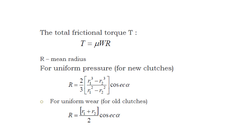The total frictional torque T is equal to μWR. It means T equals μ multiplied by W multiplied by R, where μ is the frictional coefficient, W is the applied pressure on the male cone along the female cone, and R is the mean radius.